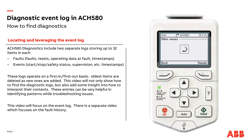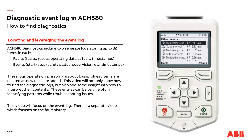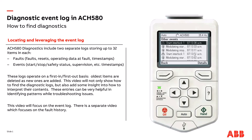Now we'll stop the drive and take a look at the event log. We can see Stop command and modulation stops. Now we'll start again, and this time I'm going to open up a safety while we're running. We get the interlock warning. Looking at the event log: modulation started, then the start interlock opened — and the timestamp is great here because we can see the whole sequence of operation.